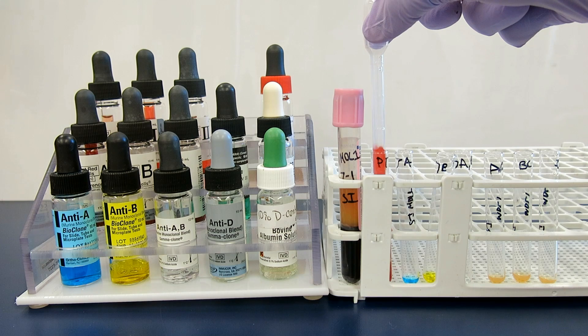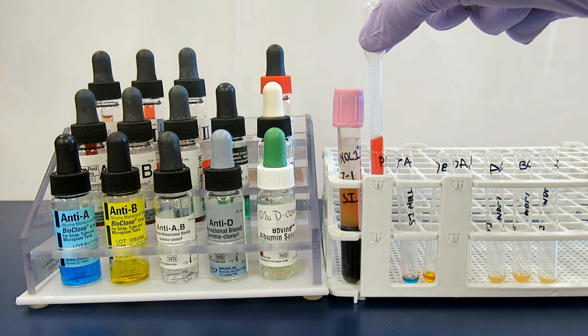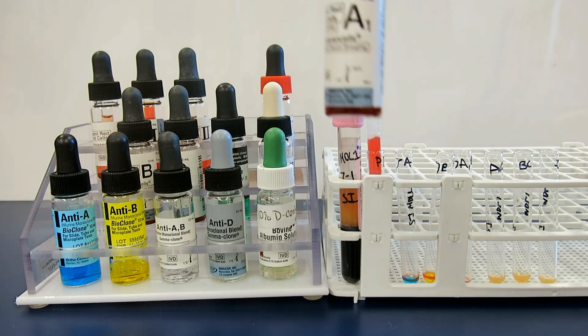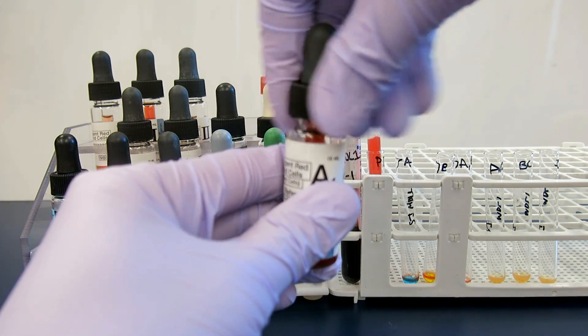Add one drop of patient cell suspension into the forward typing tubes. Now add one drop of the appropriate cells into its matching test tube for the reverse group.